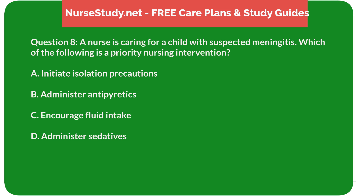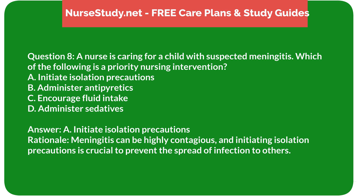Question 8: A nurse is caring for a child with suspected meningitis. Which of the following is a priority nursing intervention? A) initiate isolation precautions, B) administer antipyretics, C) encourage fluid intake, D) administer sedatives. Answer: A) initiate isolation precautions. Rationale: Meningitis can be highly contagious, and initiating isolation precautions is crucial to prevent the spread of infection to others.